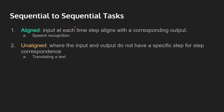Now let's talk about sequential to sequential value tasks. Sequential to sequential tasks basically means sequential data is the input and the output is also sequential. There are two types. The first one is called aligned, which means the input at each time step aligns with a corresponding output — an example of this is speech recognition. The second one is called unaligned, where the input and output do not have a specific step-for-step correspondence — this could be translating a piece of text.